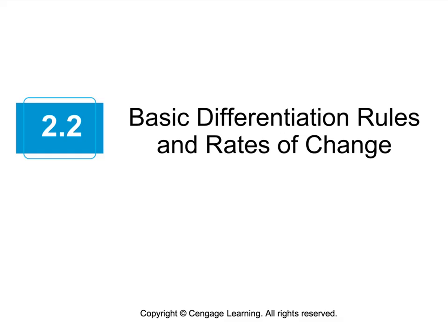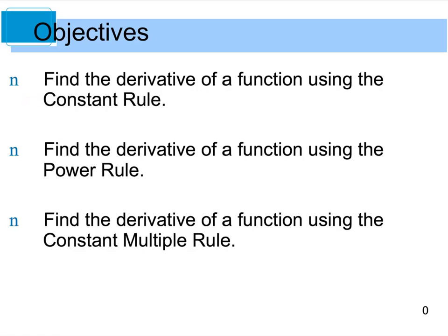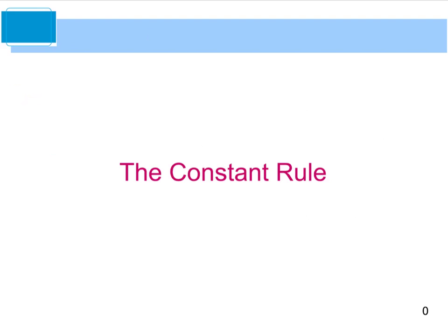Hello and welcome back to chapter 2. Today we're going to look at section 2.2, which deals with basic differentiation rules and rates of change. For the first part of section 2.2, we're going to look at how to find a derivative of a function using the constant rule, then the power rule, and then the constant multiple rule as well. So to begin, let's look at the constant rule.